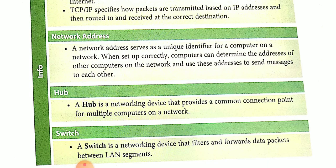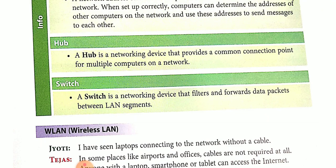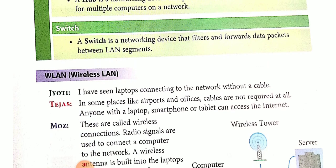A network address serves as a unique identifier for a computer on a network. When set up correctly, computers can determine the addresses of other computers on the network and use this address to send messages to each other. A hub is a networking device that provides a common connection point for multiple computers on a network. A switch is a networking device that filters and forwards data packets between LAN segments.